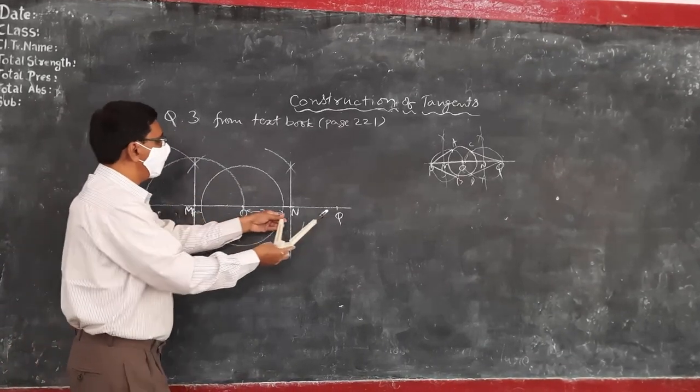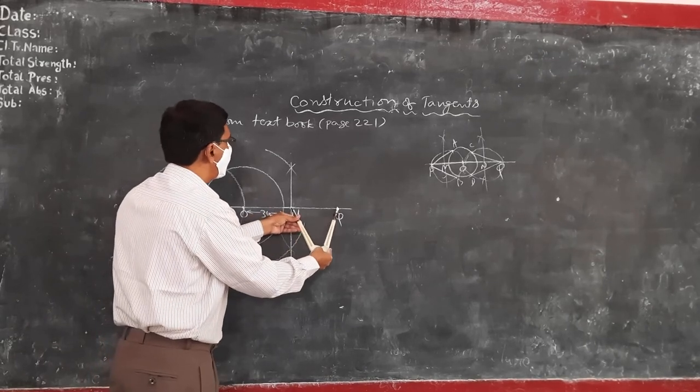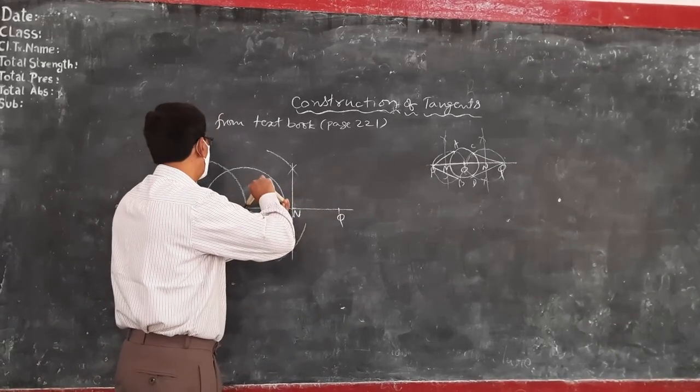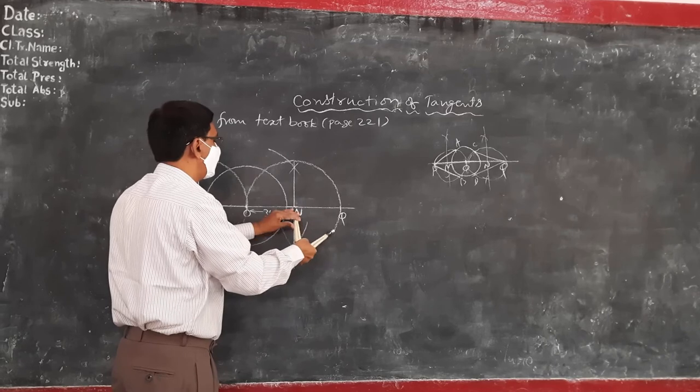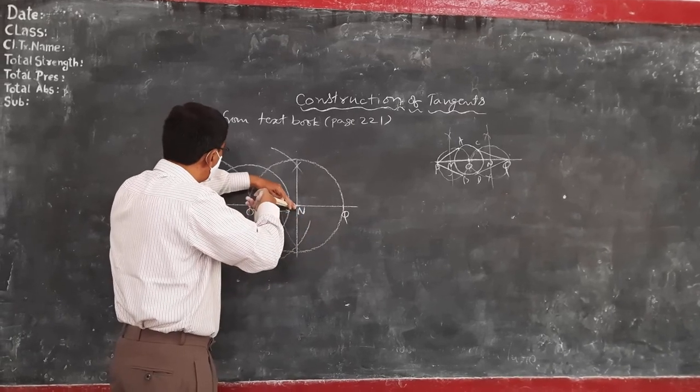Now, similarly, with N as center and QN as radius, I am constructing a circle.